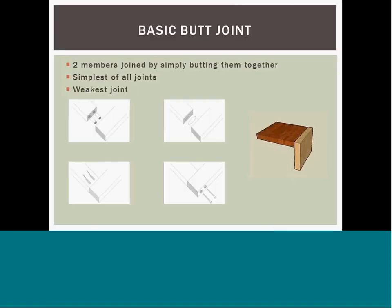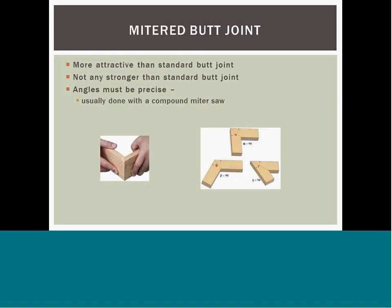We are now going to review wood jointing methods. The butt joint is a technique in which two members are joined by simply butting them together. It is the simplest joint to make, since it merely involves cutting the members to the appropriate length and butting them together. It is also the weakest, because unless some form of reinforcement is used, it relies upon glue alone to hold them together. When you want a more refined option, try a mitered butt joint — it will not be any stronger than a standard butt joint, but you will not see the end grains. You will need a compound miter saw, which is reviewed in the equipment area later in the presentation.